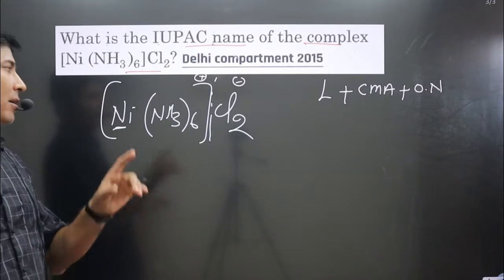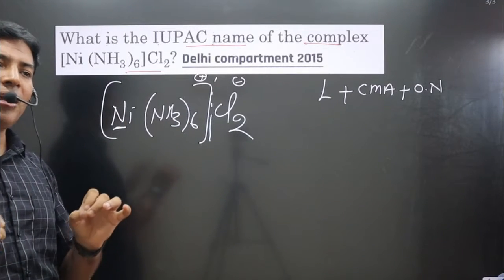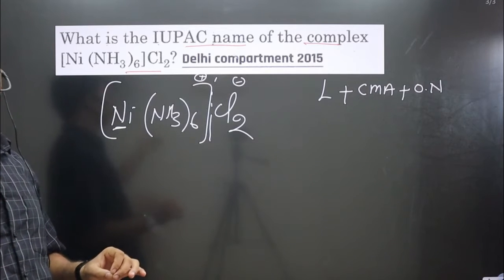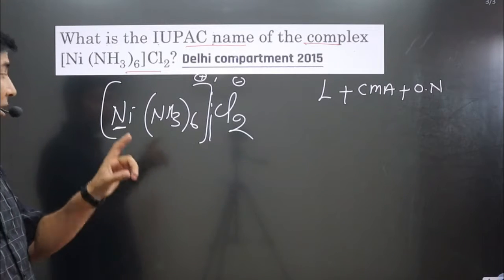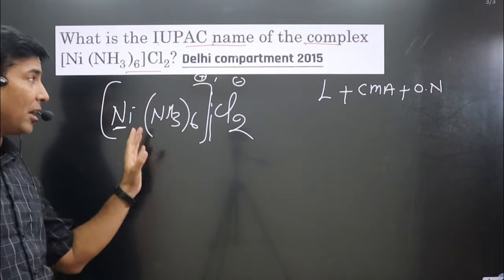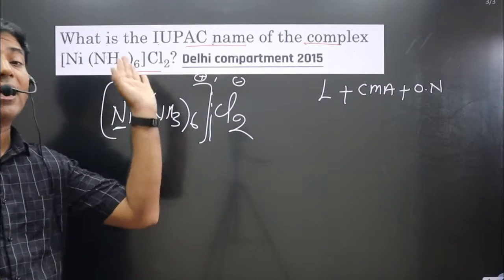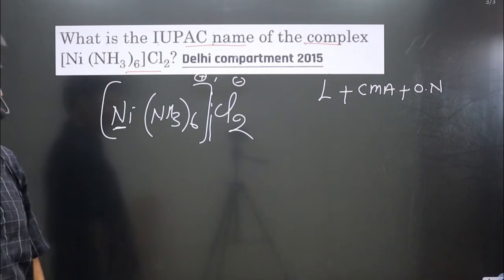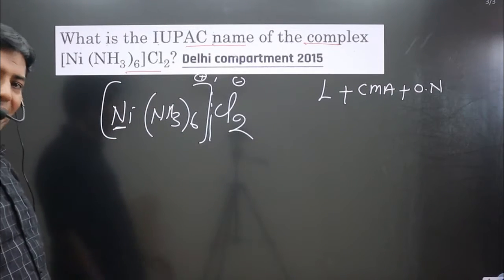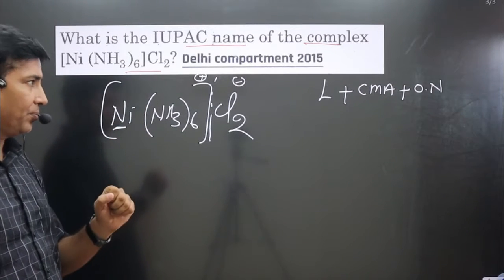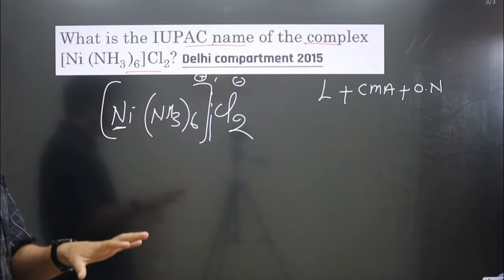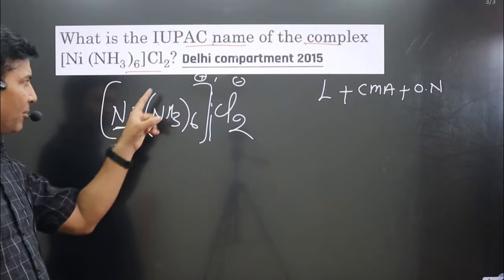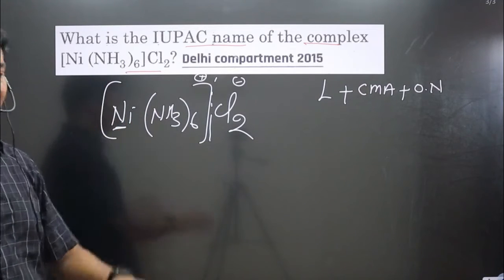Here, the central metal atom is present in the cationic complex. When naming this type of complex, we use the common name of the central metal atom as given in the periodic table. However, if the central metal atom is present in an anionic complex, we use a special name for it. In this case, it is clearly a cationic complex.